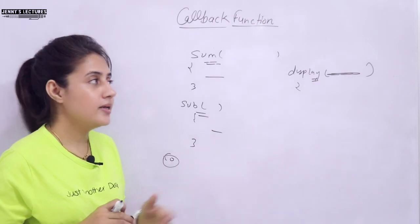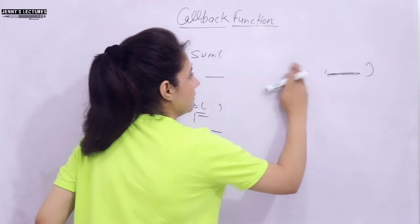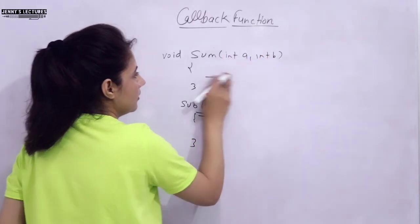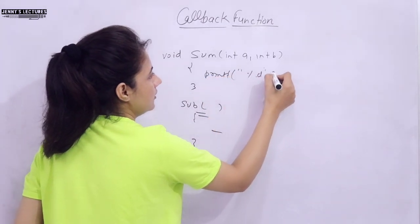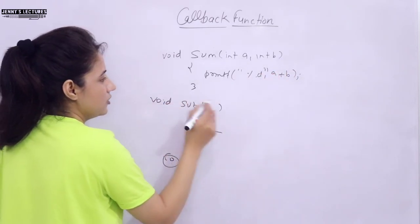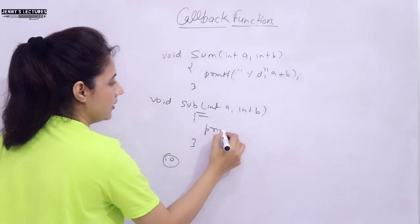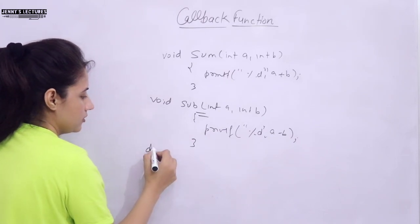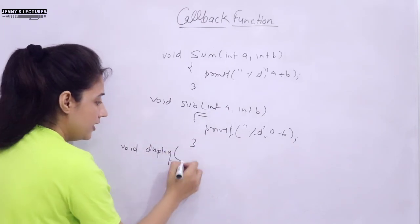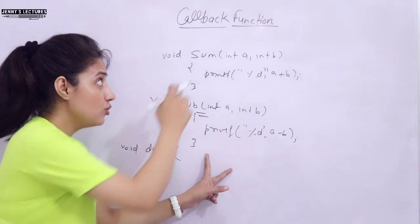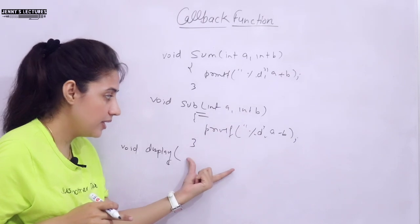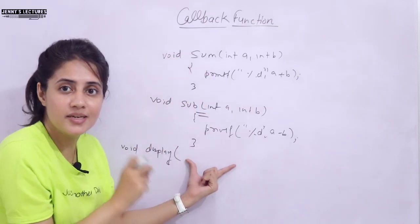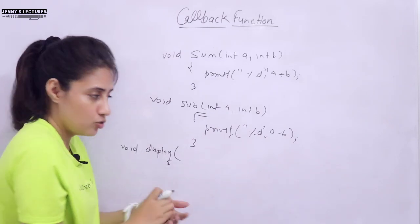We will discuss this with a proper program. Suppose we take void sum with int a, int b and printf the sum, and another function subtract with int a, int b and printf a minus b. Then we have a display function. In display, as an argument, we are going to pass the address of either sum or subtract. To accept the address of a function, we must have a function pointer. So here we declare a function pointer — void (*fptr)(int, int) — since both functions have return type void and take two int arguments.